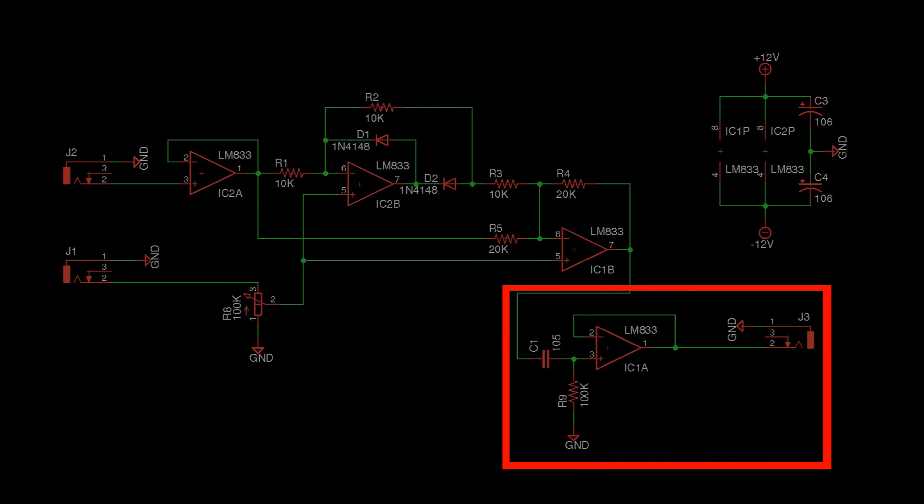The last stage is an AC coupled unity gain follower. This removes the DC bias introduced by the rectifier circuit. Now let's look at how we build this circuit on the breadboard module.